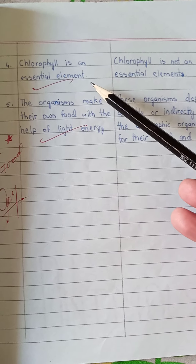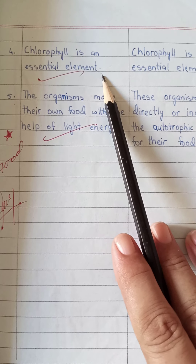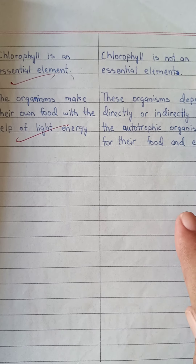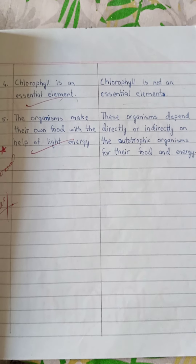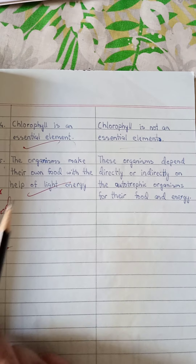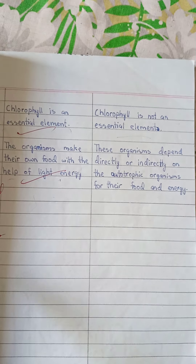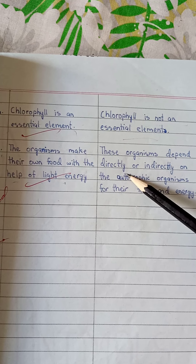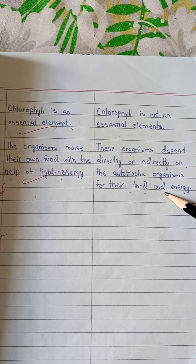Point number four: in autotrophic nutrition, chlorophyll is an essential element, while in heterotrophic nutrition, chlorophyll is not an essential element. Point number five: in autotrophic nutrition, organisms make their own food with the help of light energy. In heterotrophic nutrition, these organisms depend directly or indirectly on autotrophic organisms for their food and energy.